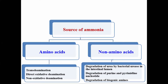Ammonia can also be gained from degradation of biogenic amines. The urea cycle is for the detoxification of nitrogen present in amino acids — that means it is for the disposal of nitrogen groups present in amino acids. Apart from that, it is indirectly involved in acid-base balance, since ammonium is a weak acid and bicarbonate is a strong base, so it indirectly manages the acid-base balance.